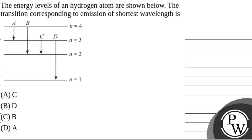Hello, let's read the question. The energy levels of a hydrogen atom are shown below. The transition corresponding to emission of shortest wavelength is? We will solve this question.